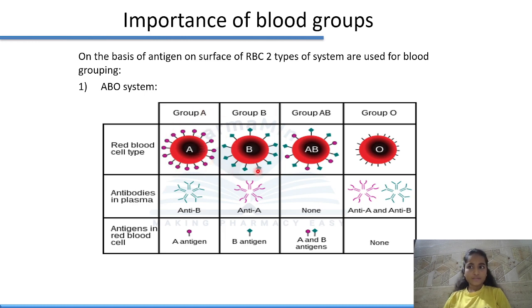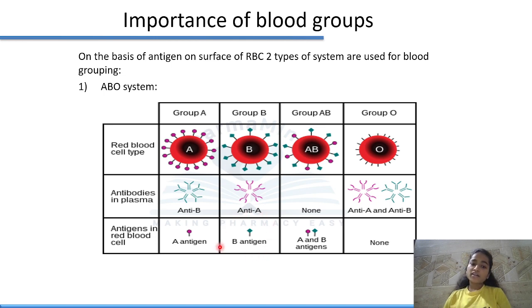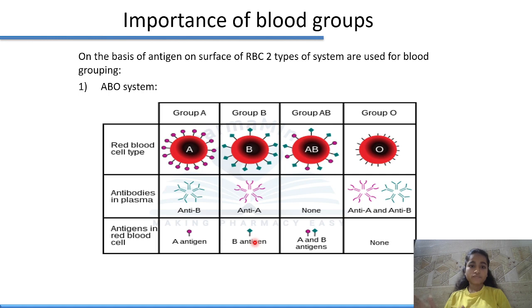In the ABO system, the antigen present on the surface of RBCs determines the blood group. If a person with blood group A is mistakenly given blood group B, the B antigens will be recognized as foreign, triggering antibody production. This antigen-antibody reaction leads to hemolysis and transfusion reactions, which can ultimately be fatal. Blood group determination before any transfusion is therefore essential.